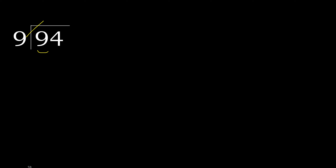9 multiplied by 2 is 18 — 18 is greater. Multiplied by 1 is 9, which is not greater. Subtract: 0. Next, bring down. Eliminate the 0 on this side.